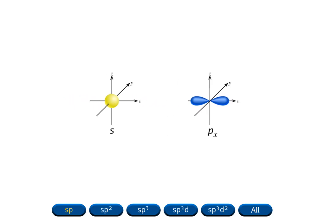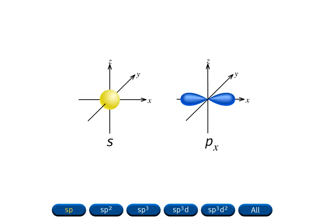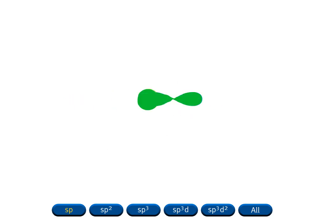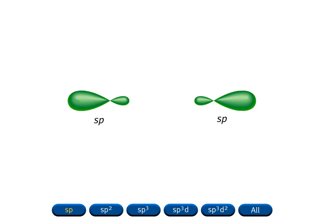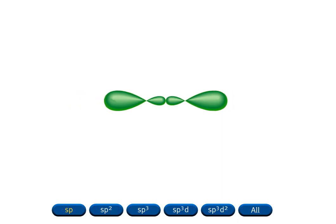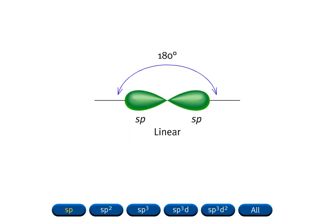Mixing an s orbital with one of the p orbitals generates two equivalent sp hybrid orbitals. Note that the number of hybrid orbitals is equal to the number of atomic orbitals that are hybridized. The set of two sp hybrid orbitals has a linear arrangement. The angle between the orbitals is 180 degrees.